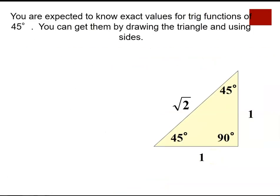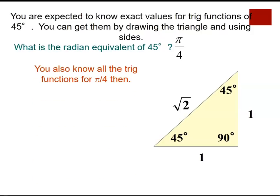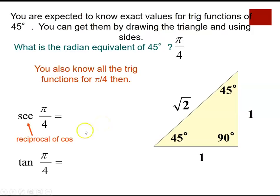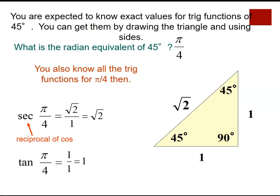The radian equivalent of 45 degrees is pi over 4. So secant of pi over 4 — the reciprocal of cosine — is square root of 2 over 1, which equals square root of 2. Tangent of pi over 4 equals 1 over 1, which is 1.